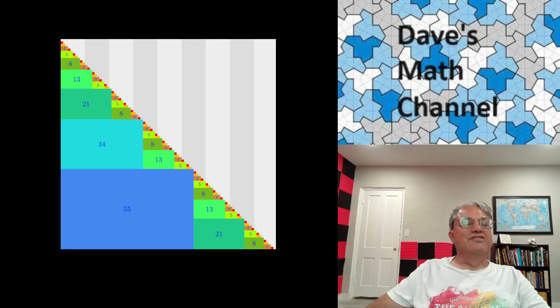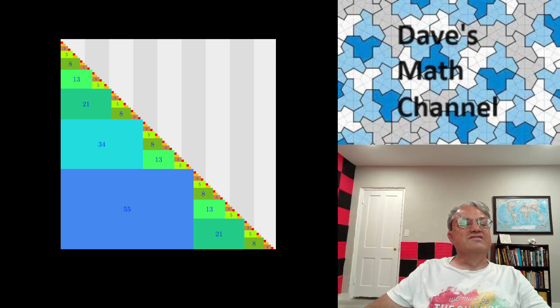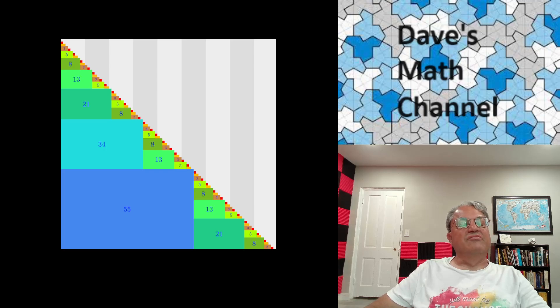For instance, 88 is 55 plus 21 plus 8 plus 3 plus 1 — each term skips a Fibonacci number. A less extreme example: 70 is 55 plus 13 plus 2. It's a nice pictorial way to look at all Zeckendorf representations — they have an interesting stairway kind of pattern.